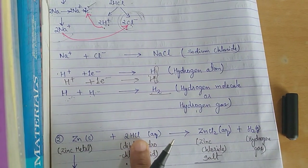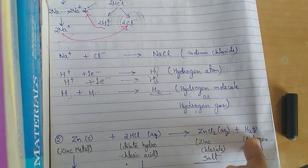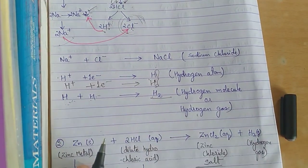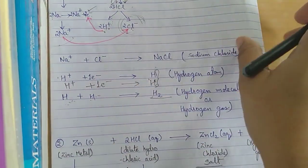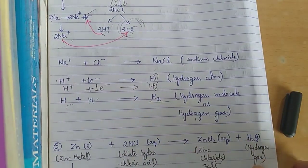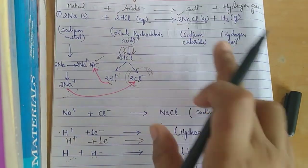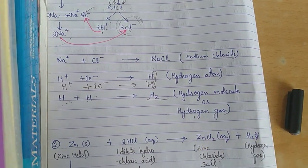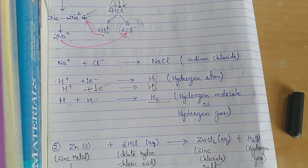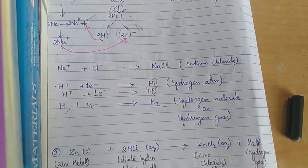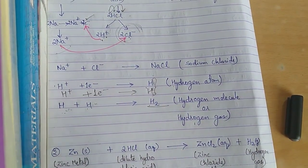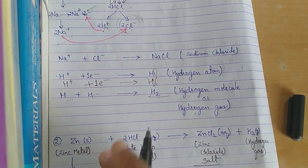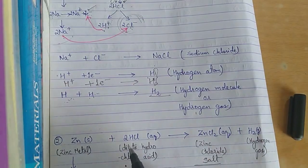Here zinc reacts with HCl to form ZnCl₂ plus H₂. A question: why is it ZnCl₂ here but NaCl earlier? The answer is that it is due to different valencies. Valency and formula writing were covered in a previous class — please watch those videos.